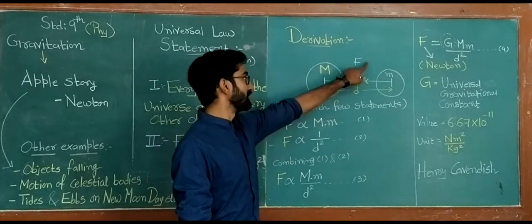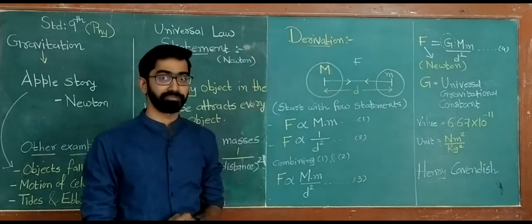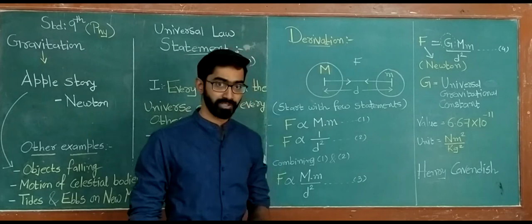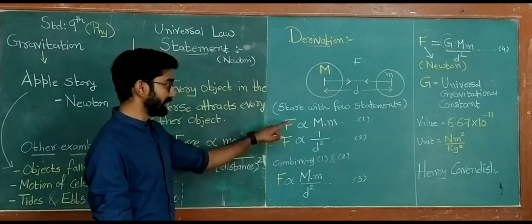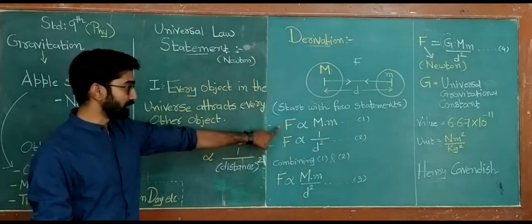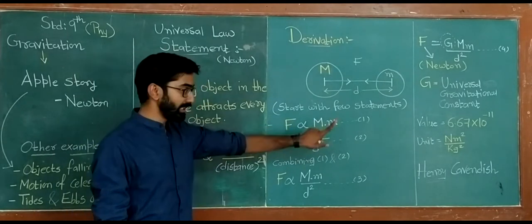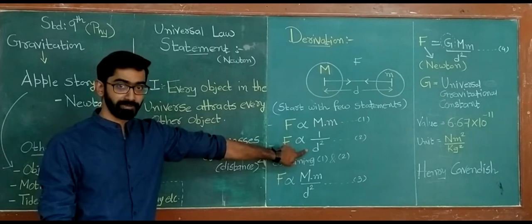And let us start with the assumption that force f is acting between them. This f is the gravitational force. According to the statement, we have written the first two steps: force is directly proportional to the product of their masses, and inversely proportional to the square of the distance between them.